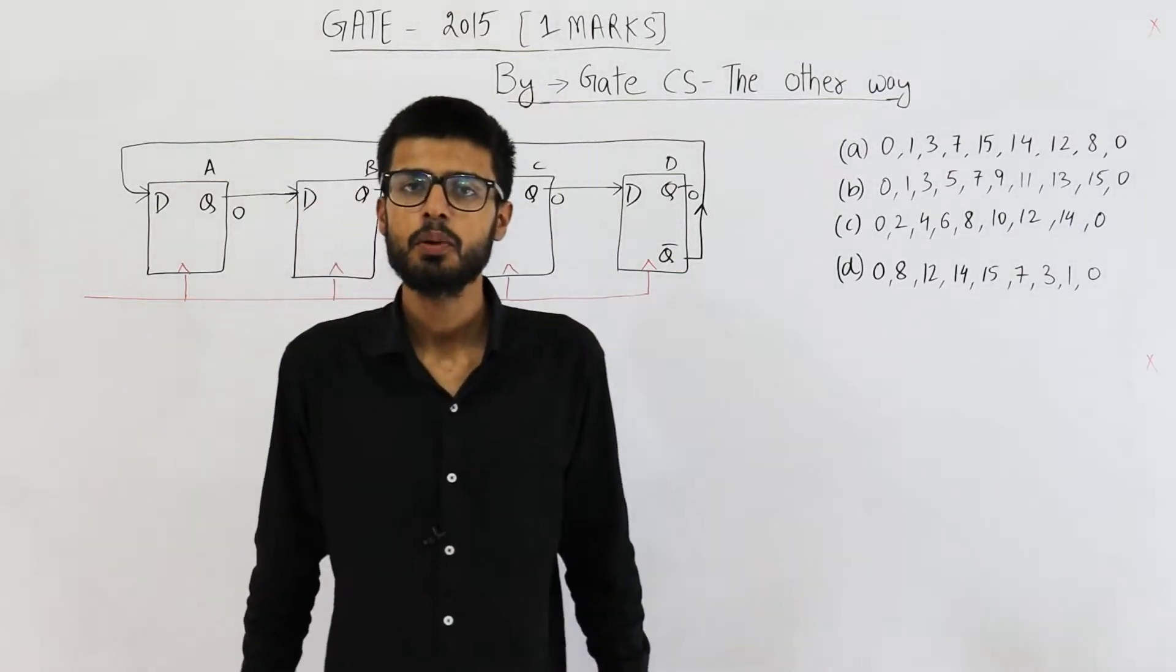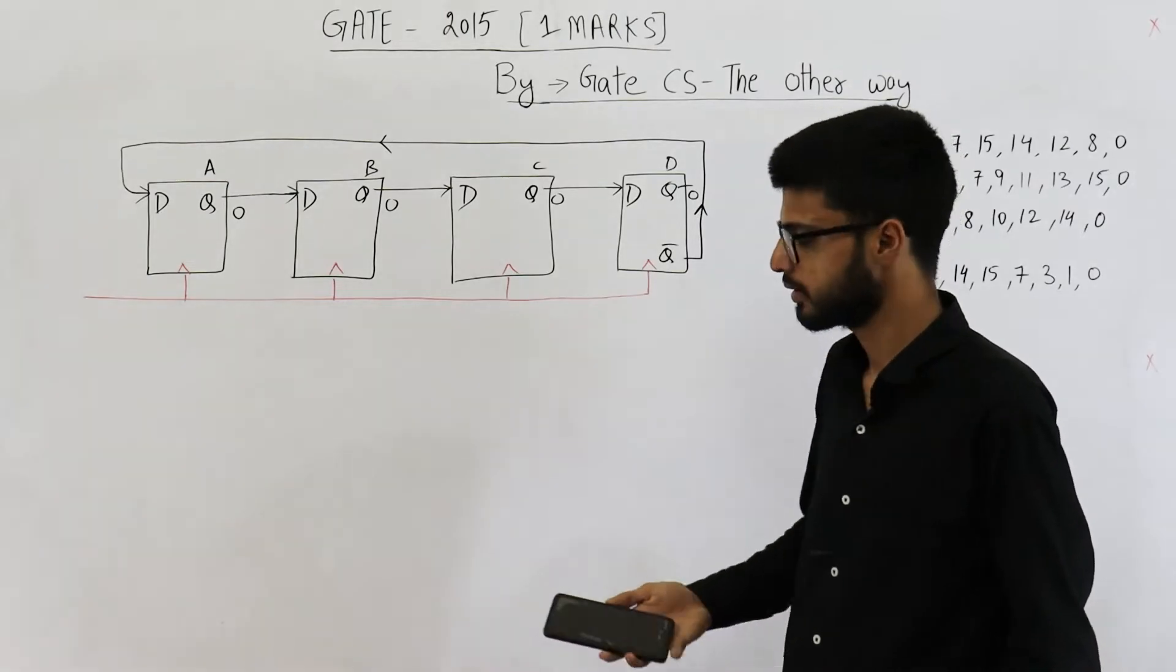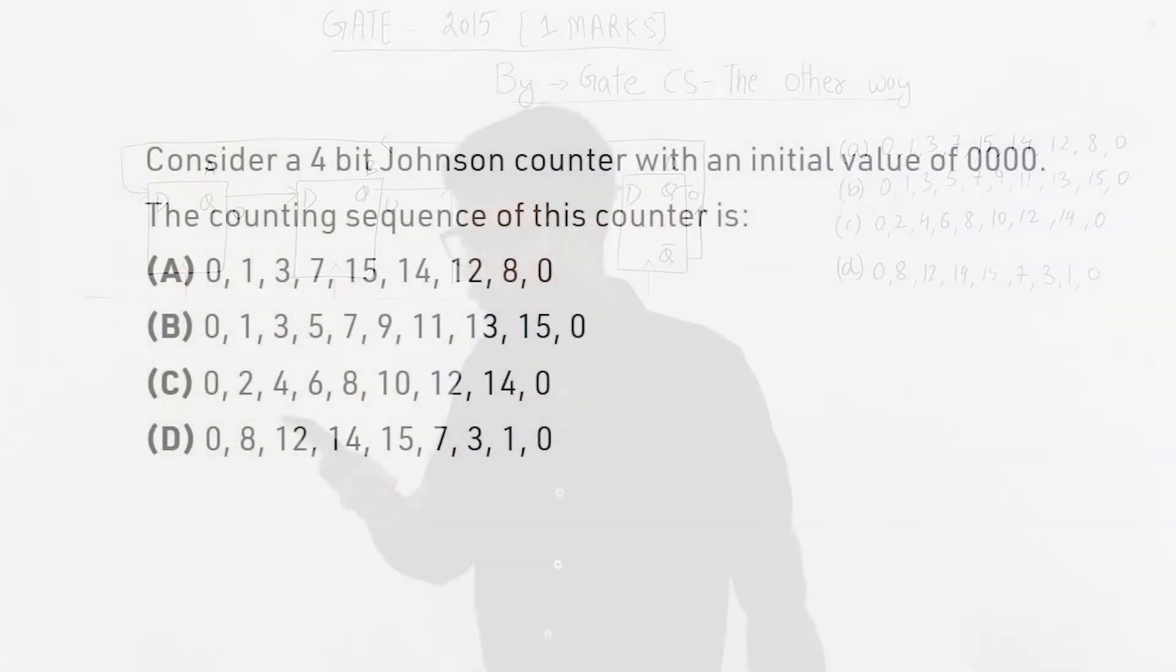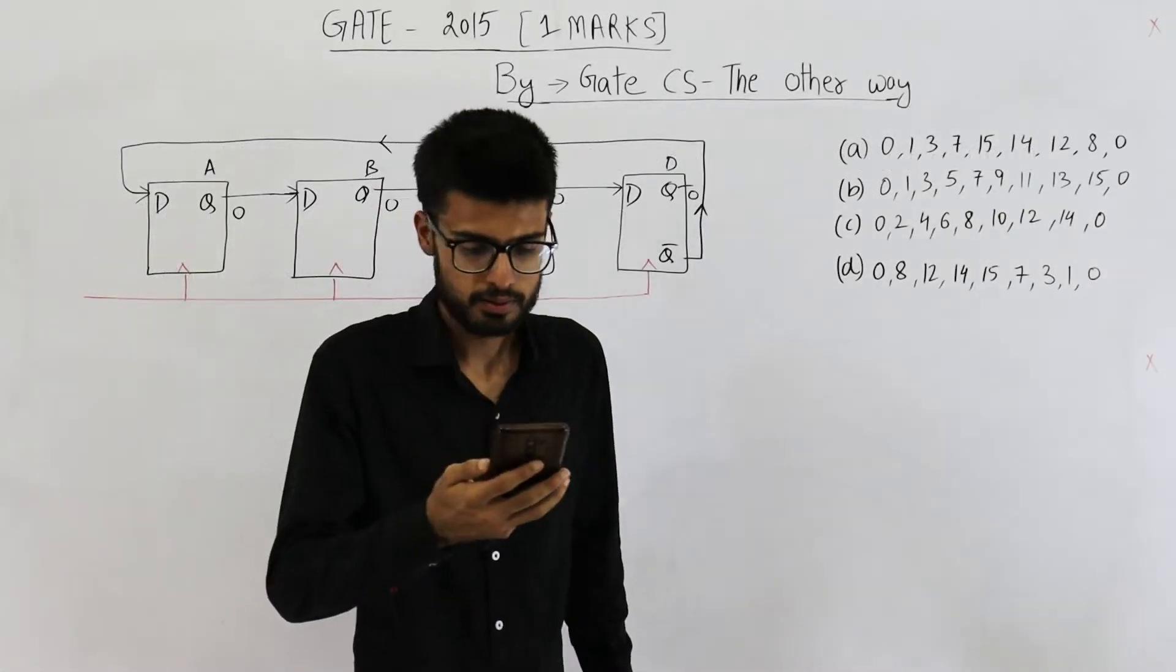Hello people, this one more question is from Gate 2015 exam. Let's first read the statement. It says, consider a 4-bit Johnson counter with initial value of 0000. The counting sequence of this counter is...